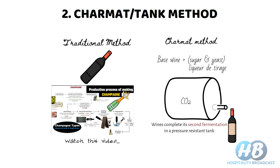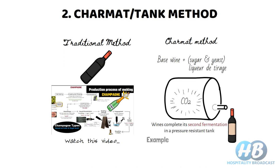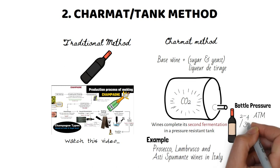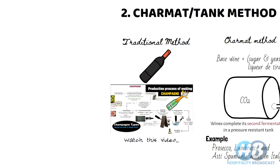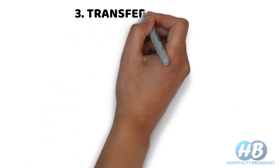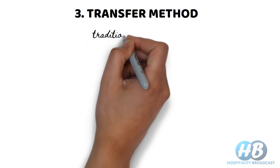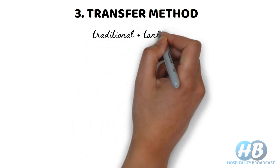Wine made from the Charmat method is more affordable and it is still used for making fine sparkling wines. The transfer method is a mix of the traditional method and the tank method.